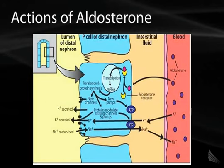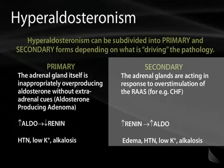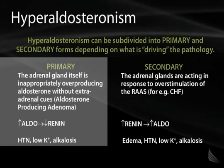The clinical manifestations of hyperaldosteronism are hypertension, hypokalemia, and metabolic alkalosis. Hyperaldosteronism is divided into primary or secondary depending on the pathology. Primary always refers to a problem with the target gland itself — in this case the adrenal gland. The most common cause of primary hyperaldosteronism is an adrenal adenoma, an aldosterone-producing adenoma. The adenoma overproduces aldosterone, and negative feedback suppresses renin, giving high aldosterone and low renin.